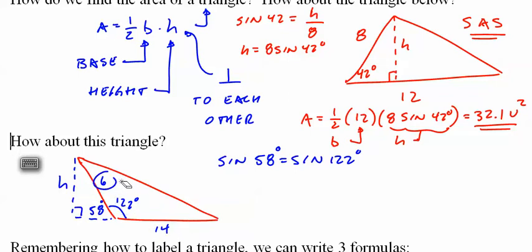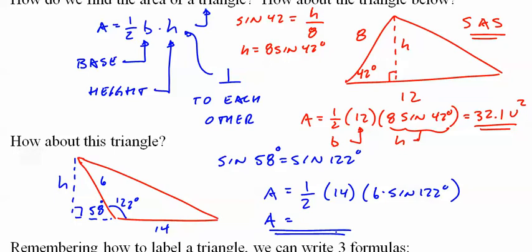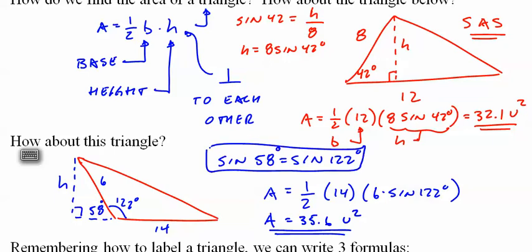We have a side-angle-side triangle, so we take it and multiply it out. The area is going to be one-half times base 14 times 6·sin(122°). Blasting this out, I get 35.6 units squared. Sine of 58° and sine of 122° are equal because they have the same reference angle — this works for sine but not cosine.